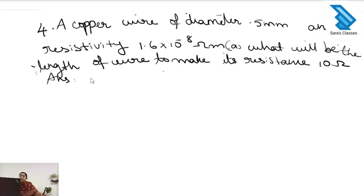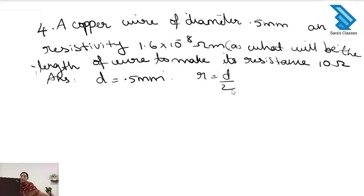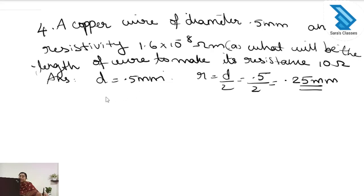Fourth question: a copper wire of diameter 0.5 millimeter and resistivity 1.7 × 10⁻⁸ ohm meter — what will be the length of the wire to make its resistance 10 ohm? The diameter is 0.5 millimeter, so the radius is 0.5 divided by 2, which is 0.25 millimeter. Converting to meters: radius equals 0.25 × 10⁻³ meter.